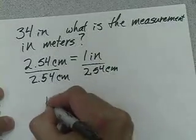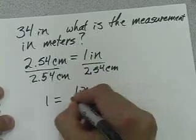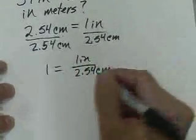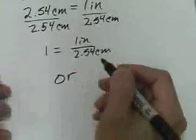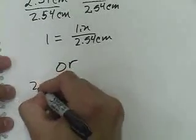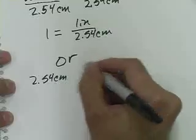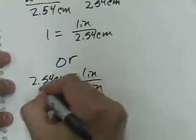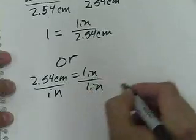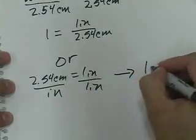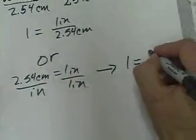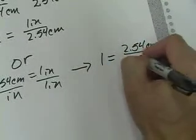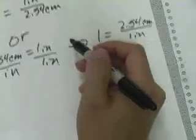We'd have one equal to one inch over 2.54 centimeters. Or we could do 2.54 centimeters equals 1 inch and divide both sides by inches, which is going to give us one equal to 2.54 centimeters over 1 inch. Which one do we want to use?